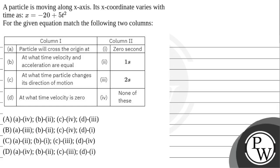Hello Bacho, let us read the question. A particle is moving along the x-axis. Its x-coordinate varies with time as x is equal to minus 20 plus 5t squared. For the given equation, match the following two columns.